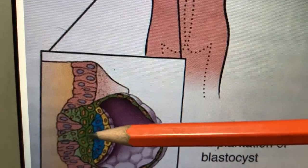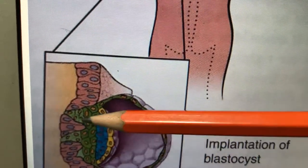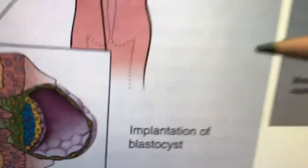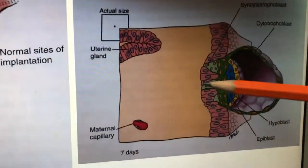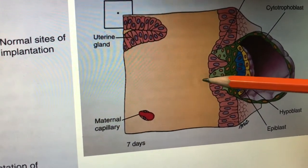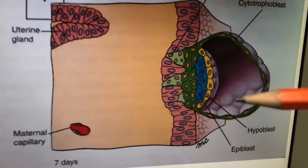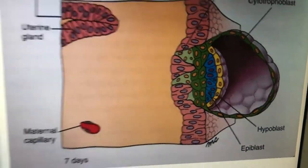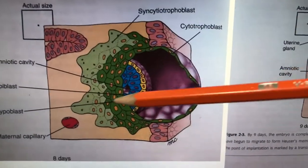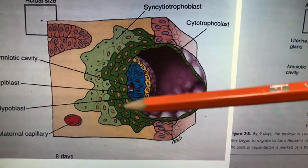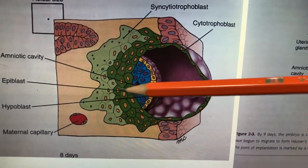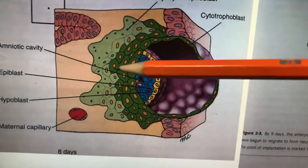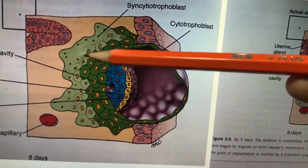The trophoblastic cells multiply and become two layers: the inner one is called the cytotrophoblast, and the outer pale/light green-colored layer is called the syncytiotrophoblast. Getting implanted in the uterine lining, it multiplies and enters into it. The syncytiotrophoblastic cells multiply and even the cytotrophoblastic cells encroach into the syncytiotrophoblast, entering into the uterine endometrium.